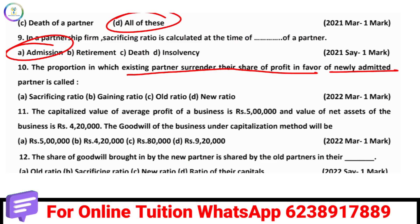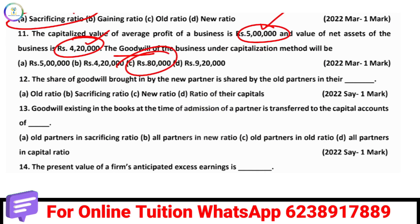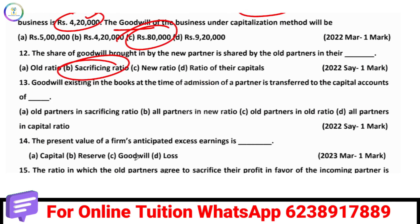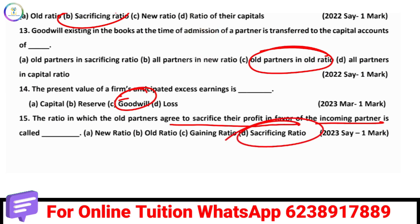Goodwill is the same as capitalized value, which is $4.50. Old partners surrender their share through the sacrificing ratio. The present value of a firm's anticipated excess earnings is goodwill. The ratio in which old partners agree to sacrifice their profit in favour of an incoming partner is the sacrificing ratio.